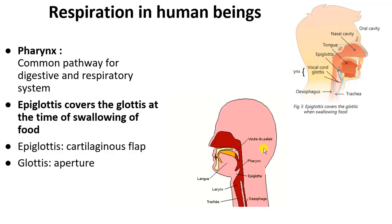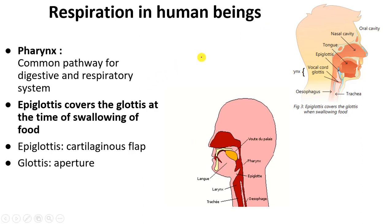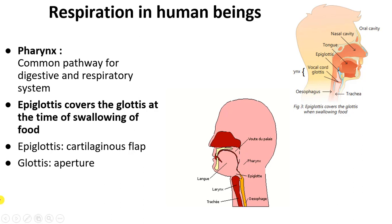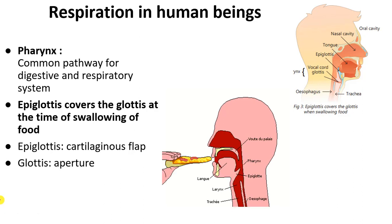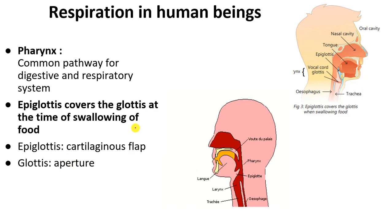Hey everyone, let's continue with the human respiratory system. In the last session, we studied about the first two parts of the airways, that is the nose, nasal cavity, and pharynx. Now we are going to study about the later parts of the airways.